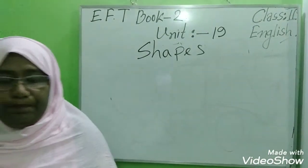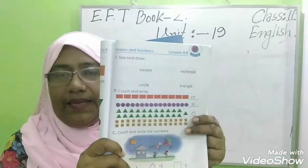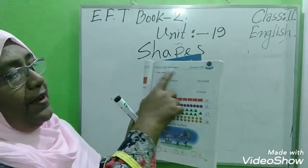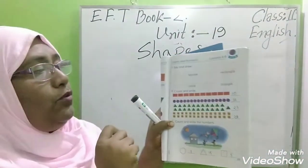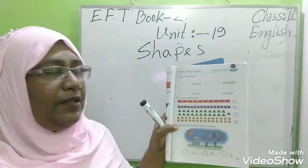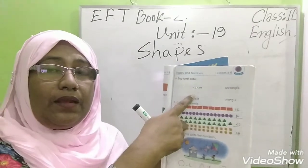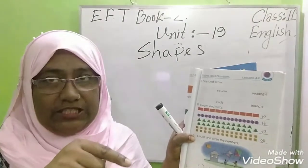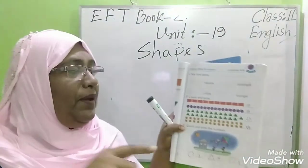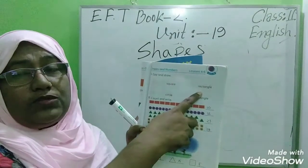Look at here, page 39. This is the first count of shapes and numbers. Say and draw — the number we have to say and draw. This is the number we have to look at.